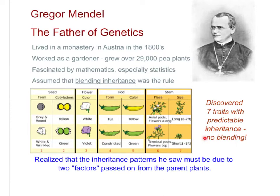He discovered seven unique traits in pea plants that were predictable in their inheritance and showed no blending. The pods could be either full or constricted, yellow or green; flowers could be white or purple; seeds could be round or wrinkled; and plants could be tall or short. When plants with yellow pods and green pods were crossed, there was no in-between yellow-green — it was either yellow or green. The same held true for height and all the other traits. There was no blending rule being followed.